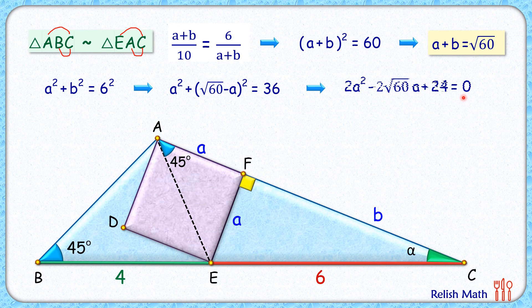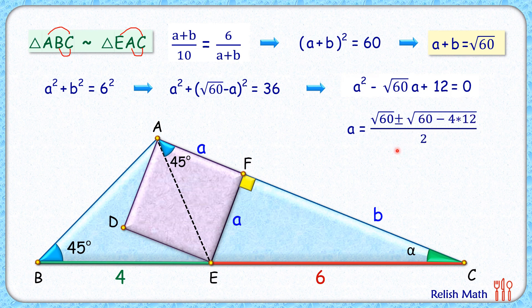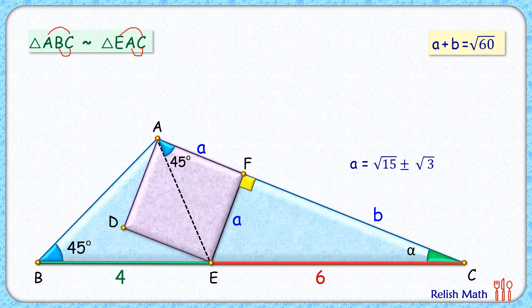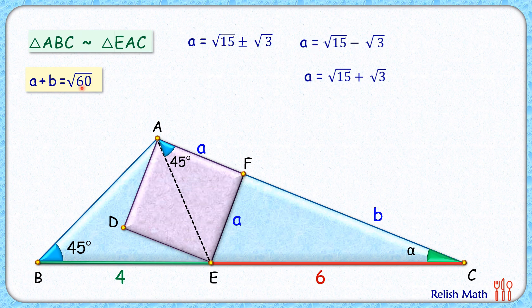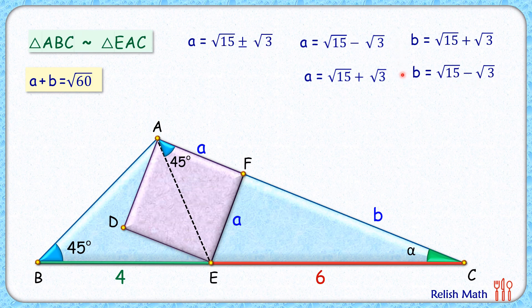Dividing the full equation by 2 and solving the quadratic using the quadratic formula, we get a = √15 ± √3. So a can be either √15 − √3 or √15 + √3. Putting these values into a + b = √60, the corresponding values of b are √15 + √3 and √15 − √3 respectively.